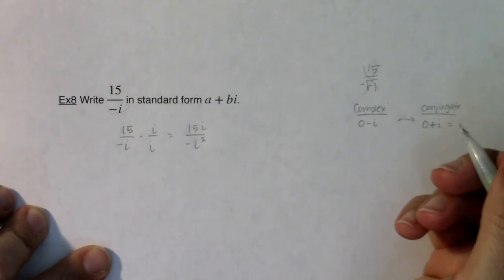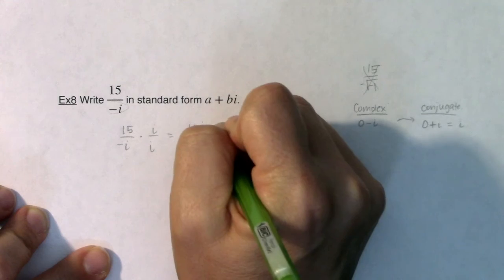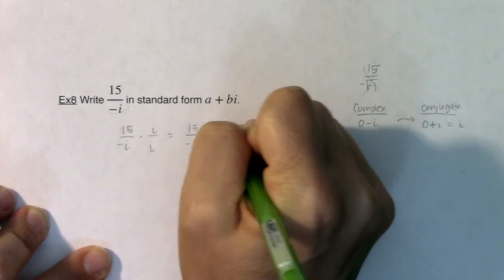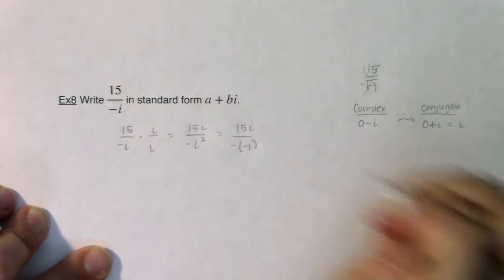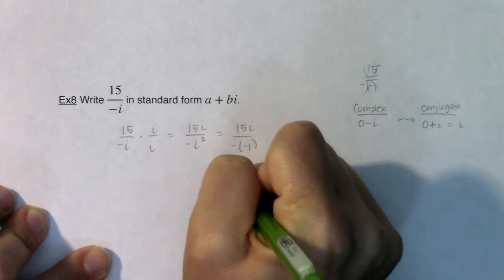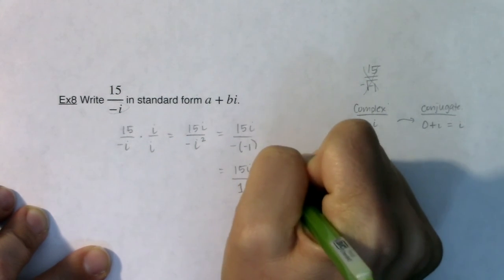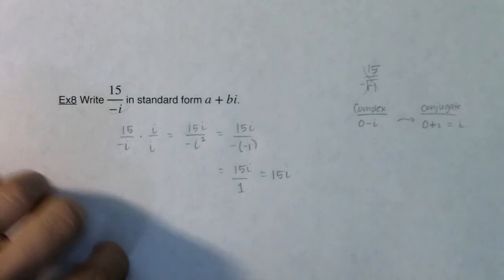i squared in and of itself is negative 1, so I'm looking at 15i over a negative of negative 1. Well, that's just 15i over 1, which is just 15i, and that's how we would solve that one.